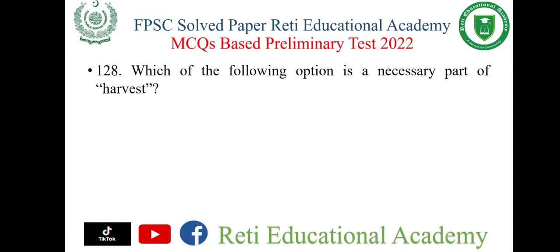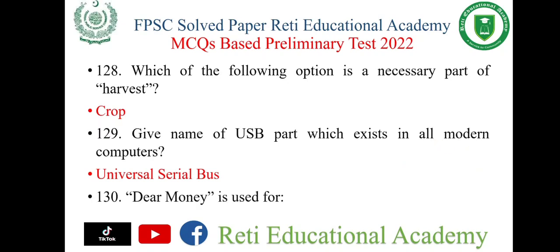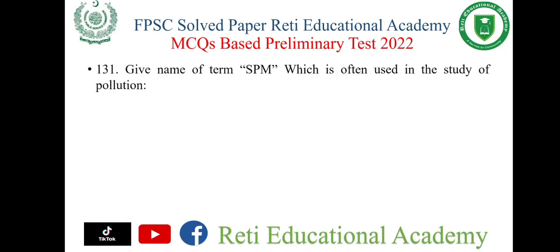Question number 128: Which of the following is a necessary part of harvest? The right option is crop. Question number 129: Give the name of the USB part which exists in all modern computers — the right option is universal serial bus. Question number 130: Dear money is used for a high rate of interest. Question number 131: Give the name of SPM which is often used in the study of pollution — the right option is suspended particulate matter.